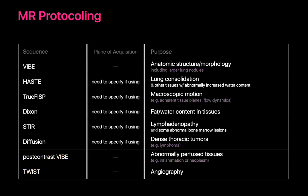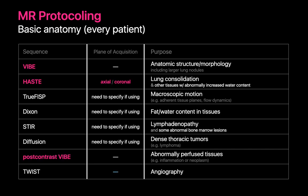There's a baseline set of workhorse sequences we'll get on every chest MRI regardless of the clinical indication: pre and post contrast VIBE images and HASTE images acquired in the axial and coronal plane. These give us a chance to look at anatomical structure and morphology, abnormal enhancement, and pick up areas with abnormally increased water content or edema, which is often an indicator for pathology in the body.